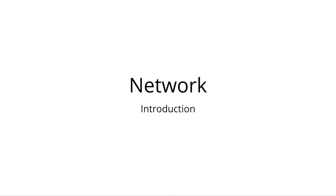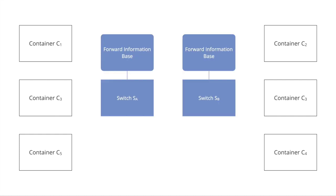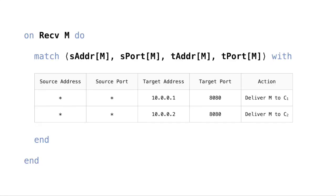A communicating system can be modeled as a graph. The nodes of the graph consist of a set of containers and a set of switches — here, a switch is a conceptual component, not an actual component. A switch can be modeled as a function and a forward information base. A switch can match any part of a message — typically the source address, source port, target address, and target port — against its forward information base to determine the next action. A switch may either drop a message, deliver a message to a container or daemon, forward a message to another switch, or translate a message before calling itself recursively with the translated message.